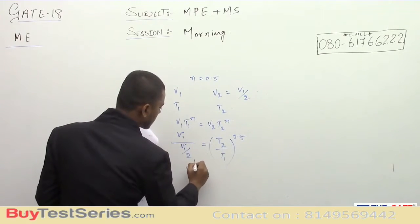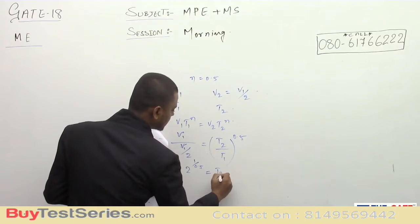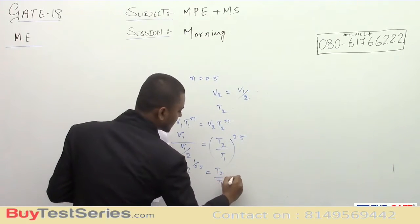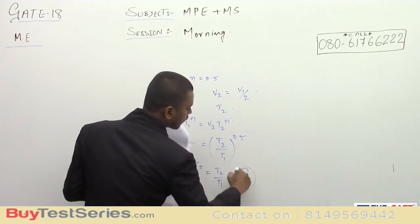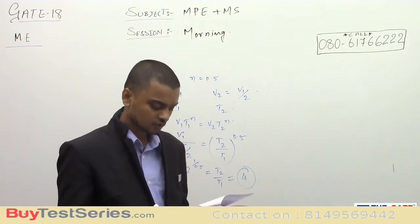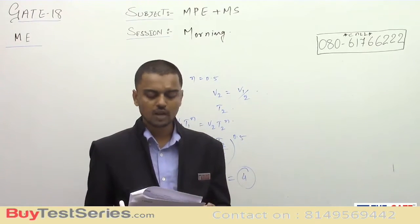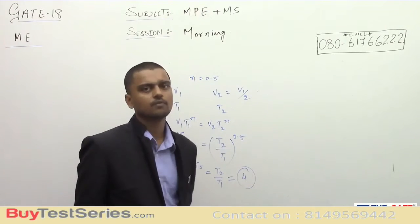to the power (1/0.5), which equals t2 upon t1. So the ratio equals 4. Therefore, the ratio of the new tool life to the original tool life is equal to 4.